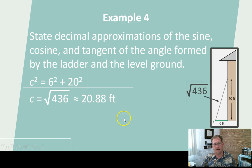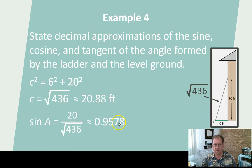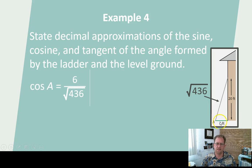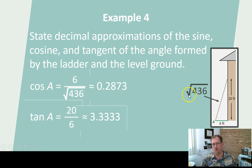Now I can get the sine, which is opposite over hypotenuse: 20 over radical 436 — after rationalizing, the decimal approximation is 0.9578. The cosine will be 6 over radical 436, and after rationalizing, the decimal approximation is 0.2873. And opposite over adjacent — 20 over 6 — gives 3.333. So these are the trigonometric ratios for that triangle.